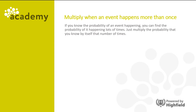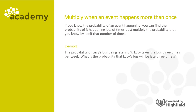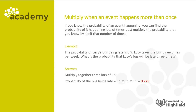If you know the probability of an event happening, you can find the probability of it happening lots of times. Just multiply the probability that you know by itself that number of times. For example, the probability of Lucy's bus being late is 0.9. Lucy takes the bus three times per week. What is the probability that Lucy's bus will be late three times? For this answer, we need to multiply together three lots of 0.9, and the probability of the bus being late all three times is 0.729.